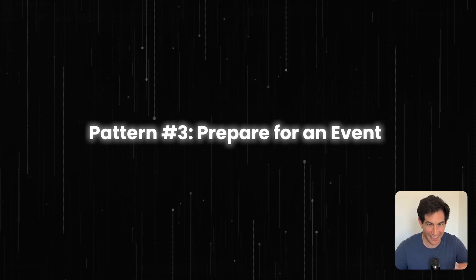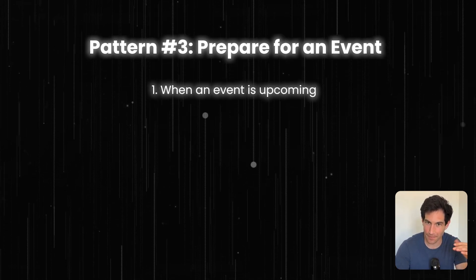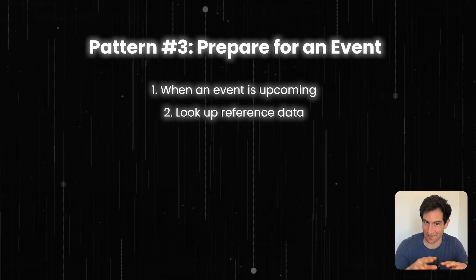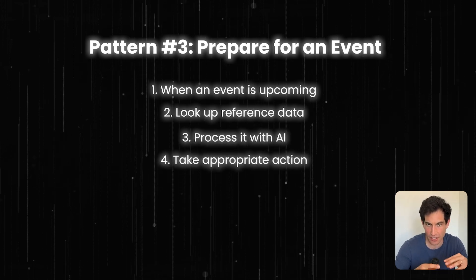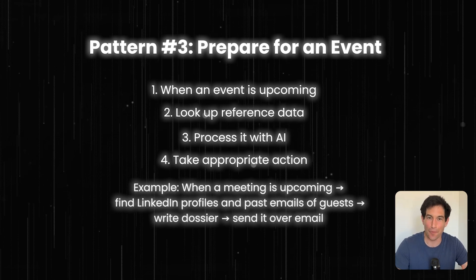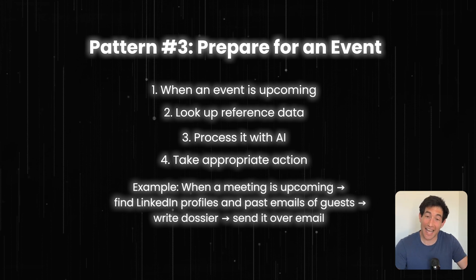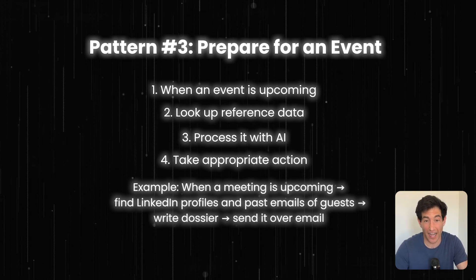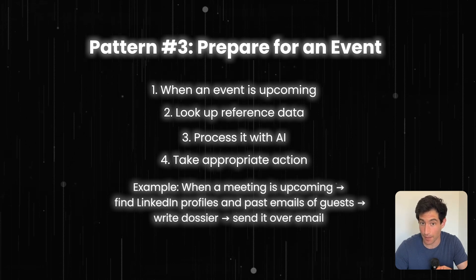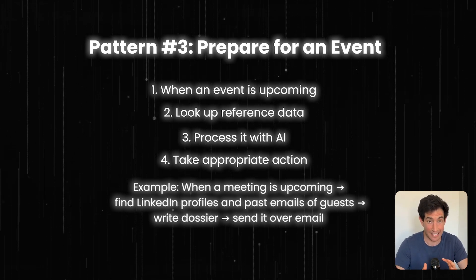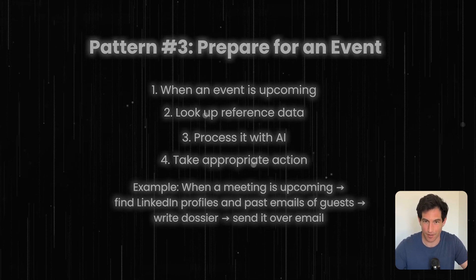Pattern number three is preparation for an event. When an event is upcoming, look up some reference information, use AI to analyze that reference information and make any necessary decisions, and then act on those decisions. For example, when I have a meeting coming up in 30 minutes with someone I've never met before, use AI to automatically look up their LinkedIn profile, look up any emails we've exchanged in the past, look up any previous meetings my company has had with them, and then compose all of that into a nice pre-meeting notification dossier and send it to me over Slack right before the meeting.